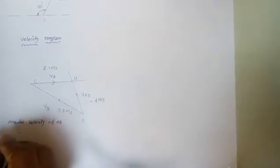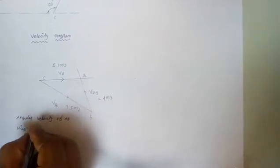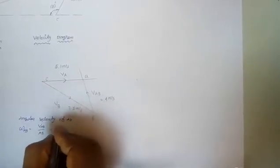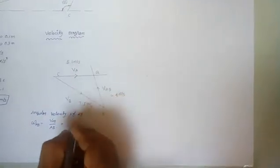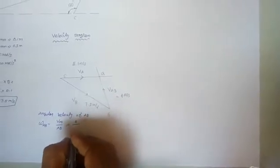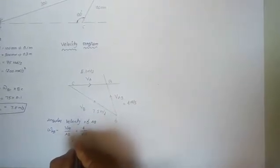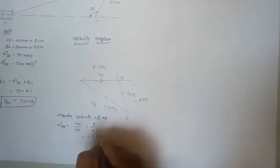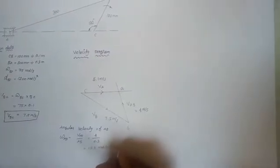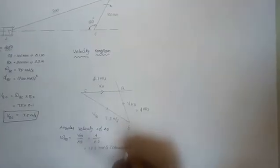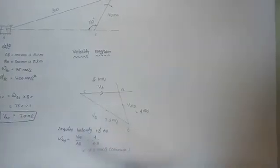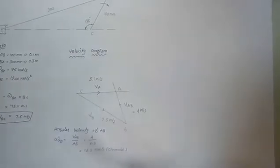Then the angular velocity of AB: angular velocity of AB is equal to velocity of AB divided by AB. The velocity of AB is equal to 4 meters per second and the length of AB is equal to 0.3 meters, so angular velocity of AB is 13.3 radians per second in the clockwise direction. Next, we go for the acceleration diagram.